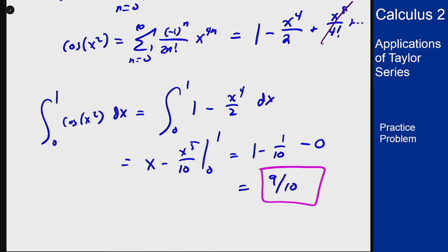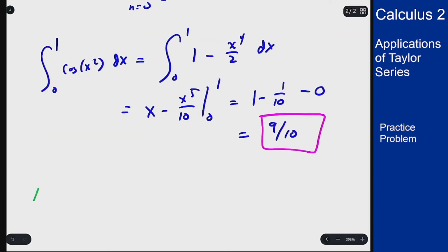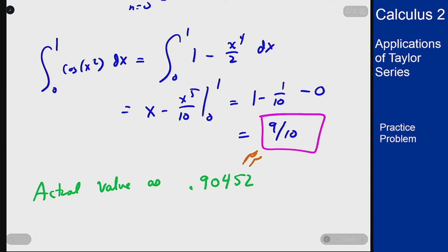If we use an online calculator to actually evaluate this integral, we get the actual value as 0.90452, which is very very close to our approximation. So we really only needed that many terms to get a good approximation to the value of this integral.